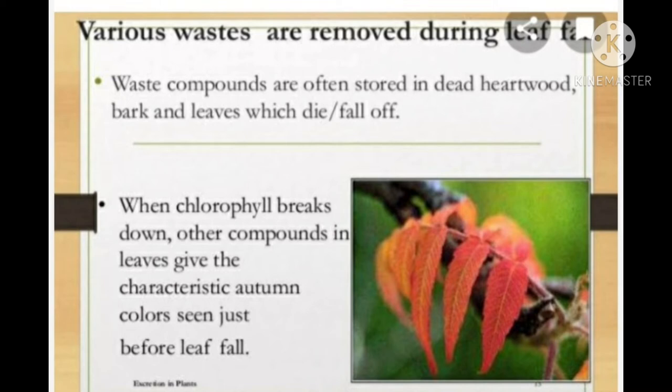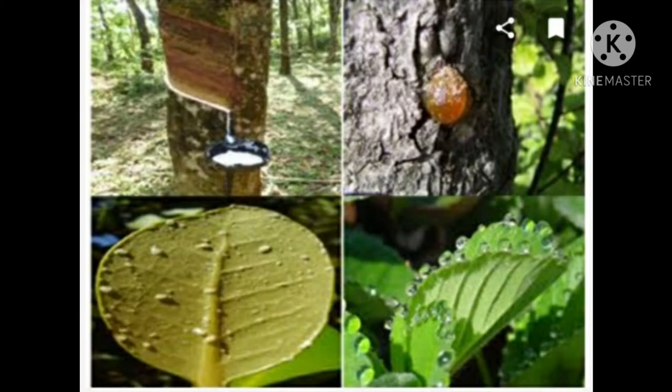In plants, waste materials may be stored in leaves, bark, and fruits. When these dead leaves, barks, and ripened fruits fall off from the tree, waste materials are got rid of. Waste stored in fruits is in the form of solid bodies. Chlorophyll breaks down and other products in leaves give the characteristic autumn color seen just before leaf fall.